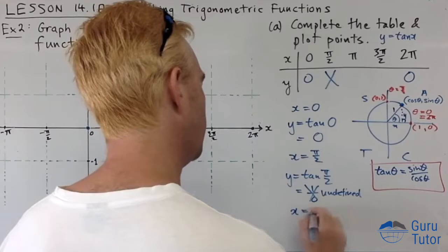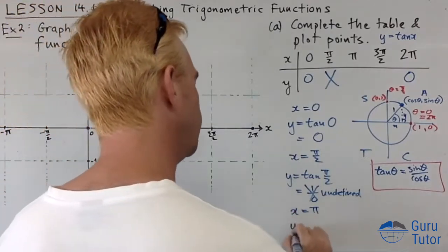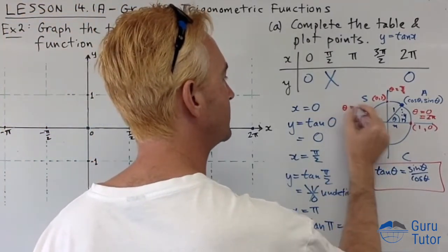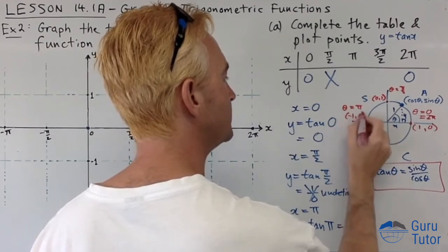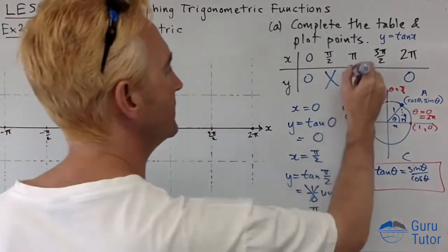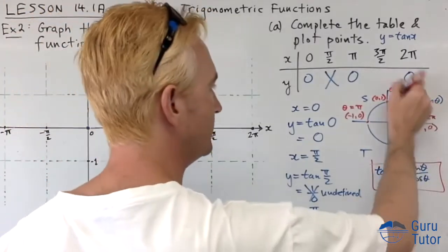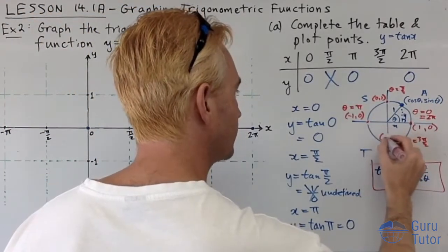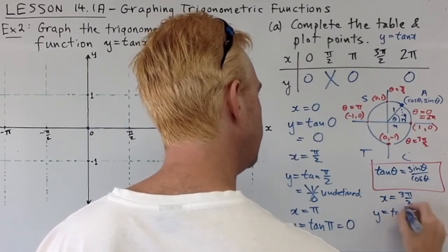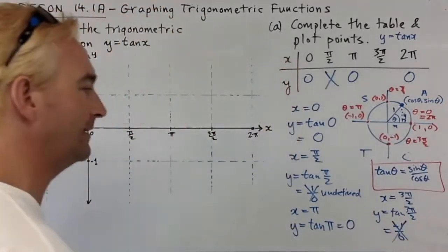For x = π, the coordinates are (−1, 0), so tan(π) = 0/(-1) = 0. For x = 3π/2, the coordinates are (0, −1), so tan(3π/2) = −1/0, which is undefined again.